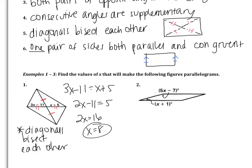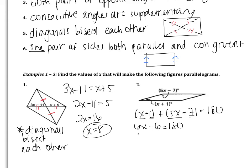We have two angles, so we're using either way 3 or way 4 — either opposite angles are congruent, or consecutive angles are supplementary. The two angles are not opposite from each other; they're consecutive. So we add them and set equal to 180 because they're supplementary: x plus 1 plus 5x minus 7 equals 180. Combining like terms: 6x minus 6 equals 180. Adding 6 gives 6x equals 186; dividing by 6 gives x equals 31. The way used is that consecutive angles are supplementary.